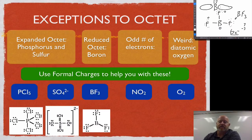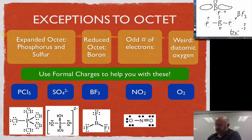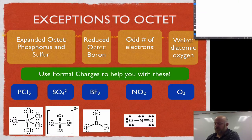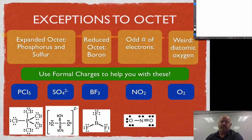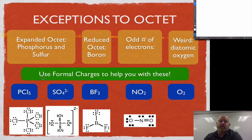Now, if you have an odd number of electrons, for example with NO2, because we have more than one possible Lewis structure, we have to decide where to put this single electron. So why do we choose to put the single electron in one particular spot instead of over on the other oxygen or on the nitrogen? The reason is you go back to formal charges — the place you put the single electron is the place that makes your formal charges the best.